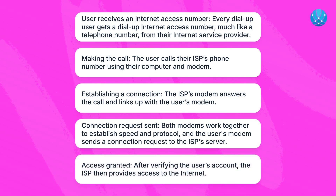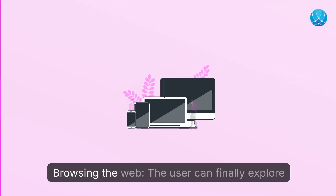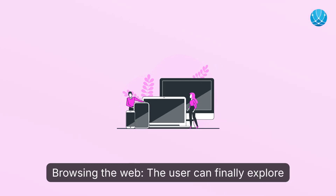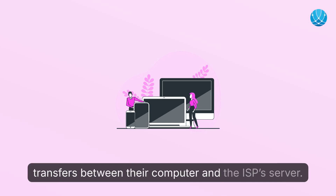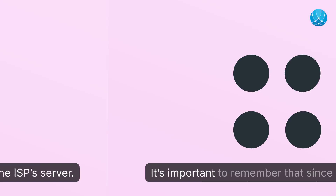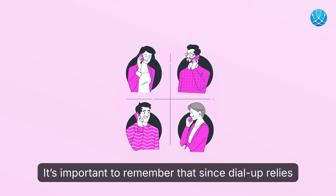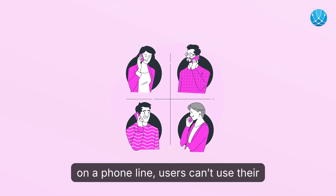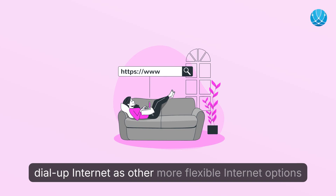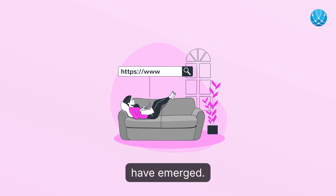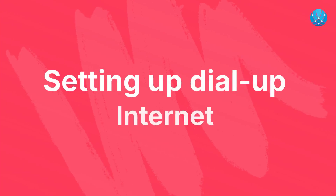Both modems work together to establish speed and protocol, and the user's modem sends a connection request to the ISP's server. After verifying the user's account, the ISP provides access to the internet, allowing data transfers between their computer and the ISP's server. It's important to remember that since dial-up relies on a phone line, users can't use their phone and computer simultaneously — a limitation that has led to the decline of dial-up internet.